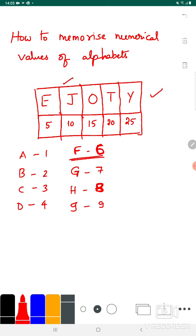J is already discussed. Next is K. Chennai Super Kings - how many players are in a cricket team? 11 members. So K is 11. L resembles a 2, so L is 12.